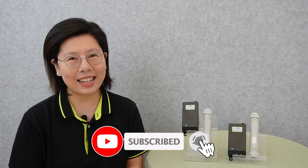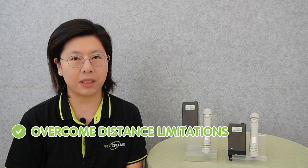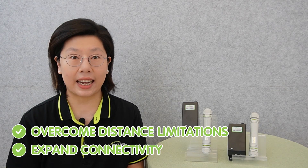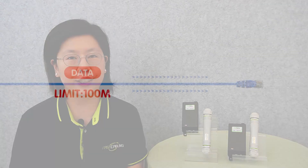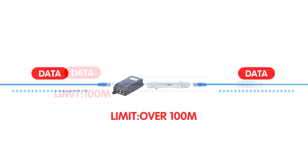Extending network data is essential for overcoming distance limitations and expanding connectivity in various applications. The need arises when network devices are located beyond the standard Ethernet cable range, typically around 100 meters — that's about 328 feet. An Ethernet extender kit amplifies the Ethernet signal, enabling data transmission over longer distances.